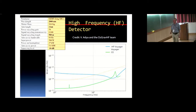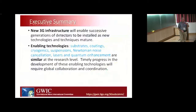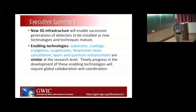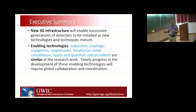As I'm young, I think we can do that in the fullness of time. So here's a brief executive summary. Three-G infrastructure will enable successive generations — the idea is we don't just build one interferometer; as happened with first-generation systems, there've been successive interferometers installed. You want to build the facility to handle at least 10 to 100 times better sensitivity than the first instrument installed. The enabling technologies — substrates, coatings, cryogenics, suspensions, Newtonian noise, and lasers — are similar at the research level whether you build Cosmic Explorer, Voyager, or Einstein Telescope.